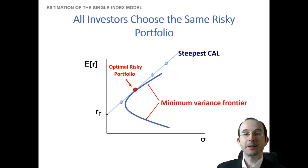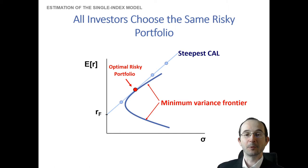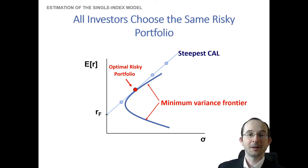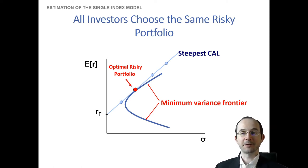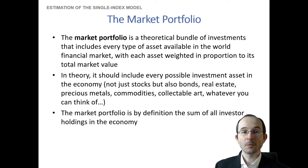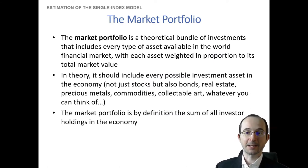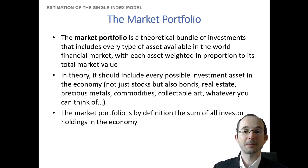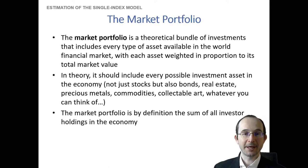So that means it makes sense to use the optimal risky portfolio as the macro factor, because it actually is going to be an asset that everybody holds if everybody follows portfolio theory. And that is an asset that is going to drive the co-movements of any of the individual risky assets.